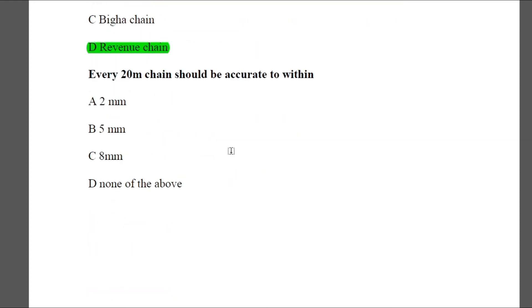Question 12: Every 20-metre chain should be accurate to within — Option A: 2 mm, Option B: 5 mm, Option C: 8 mm, Option D: none of the above. The answer is B — 5 mm.